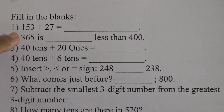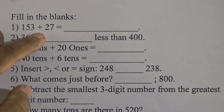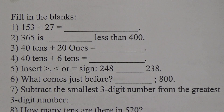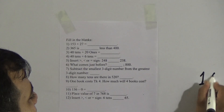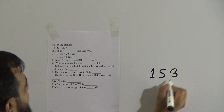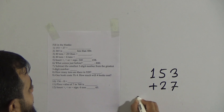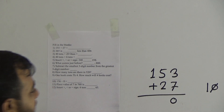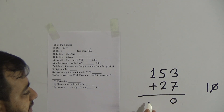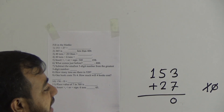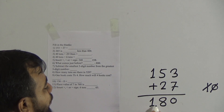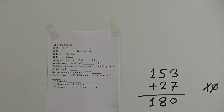Question number 1: 153 plus 27 equals blank. It's a simple addition. Do the rough work and write down the answer directly. 153 plus 27: 7 and 3 makes 10, write 0 and carry 1. 5 and 2 makes 7, plus 1 makes 8. So 180 is the answer. You can write down 180.